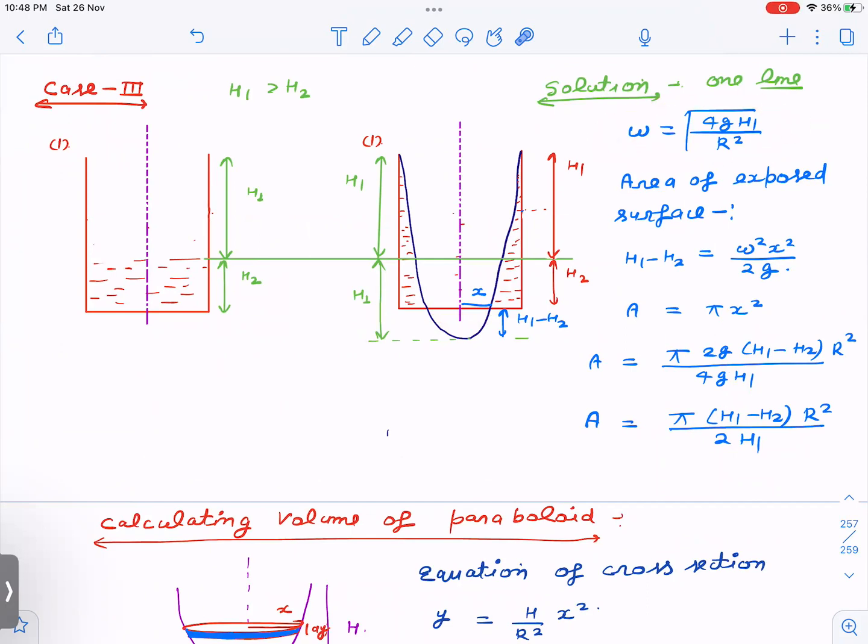Now in this, we can also find out the area of exposed surface. So area of exposed surface is, how do we find? This part is now visible when container is rotating at omega. So if this part is visible, this X we need to find out. So to find out this X, again, we can use Y equal to omega square X square by 2G. But then what is Y here? The original level goes up by H, goes down by H. So here, this is H1, the entire thing is H1. But this is H2. So this is only H1 minus H2. So you can put H1 minus H2 here, and you get area as this. So that's it.